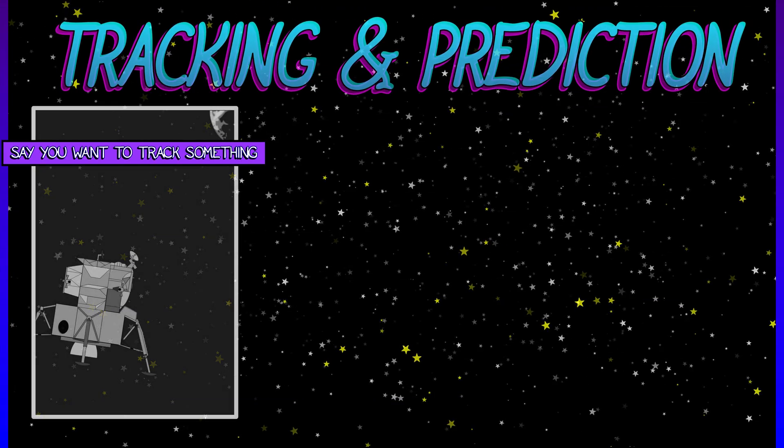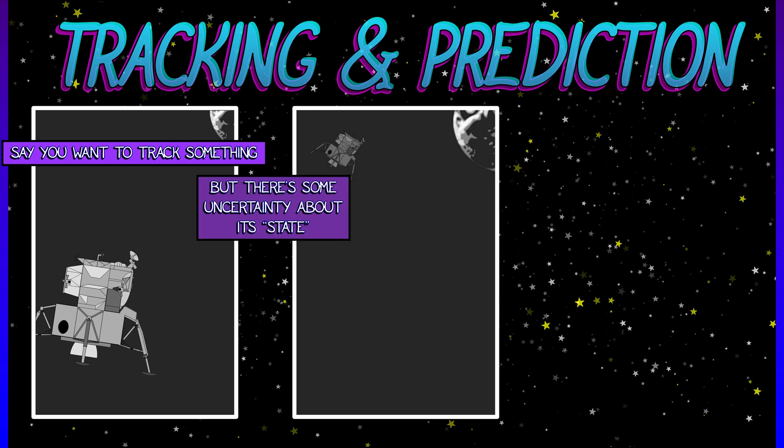Let's say you've got something that you want to track and it's off and it's gone. Where'd it go? There's some uncertainty about its state, meaning its position, its velocity, its orientation, pose, anything like that. Pack that into its state and then what do we do?